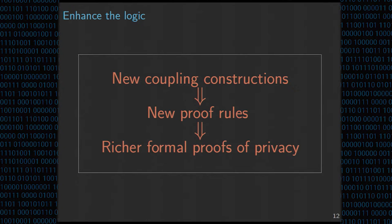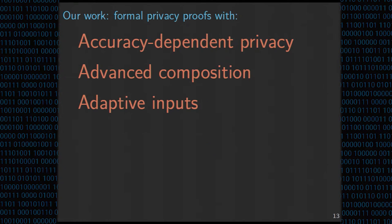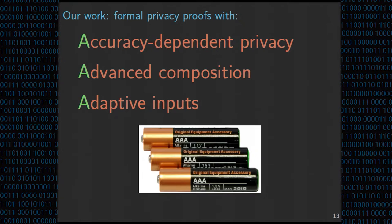The basic idea will be to enhance the logic APRHL by giving new constructions of couplings, which will lead to new proof rules, enabling richer formal proofs of privacy. More concretely, our work presents three somewhat orthogonal ways for reasoning about privacy beyond composition: first, accuracy-dependent privacy, where the privacy guarantee depends on some accuracy bound; second, the advanced composition theorem, a more refined version of the composition theorem; and third, support for mechanisms with adaptive inputs, where later inputs can depend on earlier outputs.